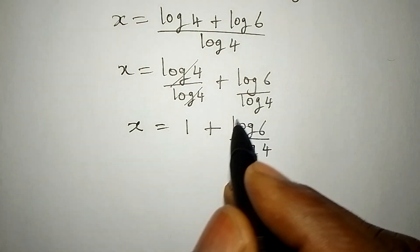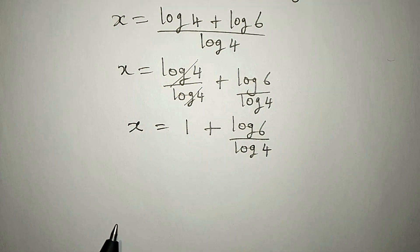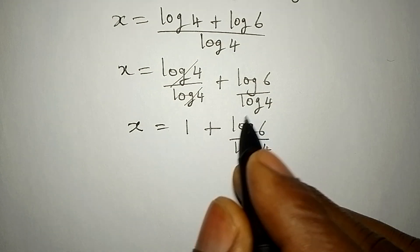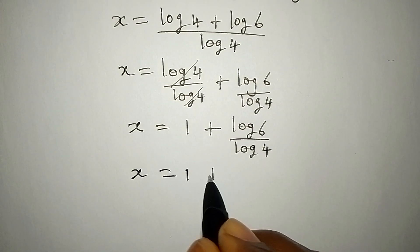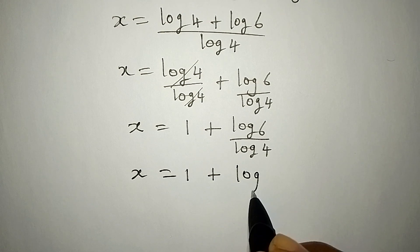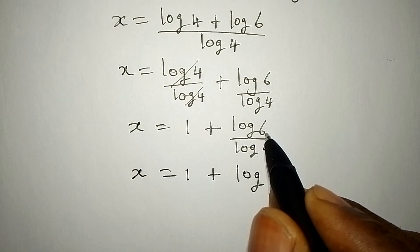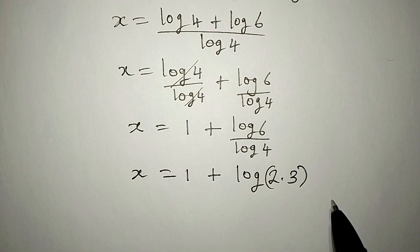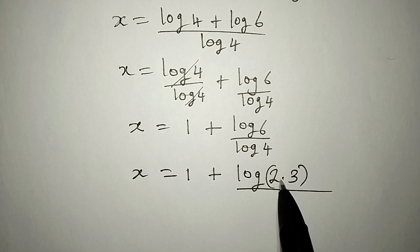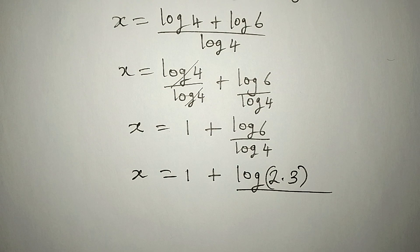But we're not stopping here because we can still simplify what we have here. So, to simplify this, we're going to have x to be equal to 1 plus log, log 6 is 2 times 3. All over log 4 on its own.